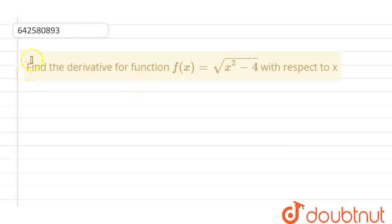So, let's start with this question. We have to find the derivative of the function f(x) equal to root of x square minus 4 with respect to x.